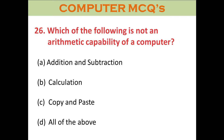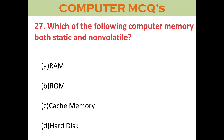Question twenty-six: Which of the following is not an arithmetic capability of a computer? A. Addition and subtraction. B. Calculation. C. Copy and paste. D. All of the above. The right answer is A: Addition and subtraction.